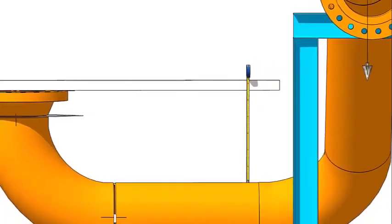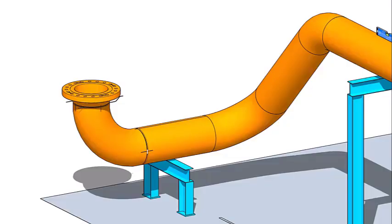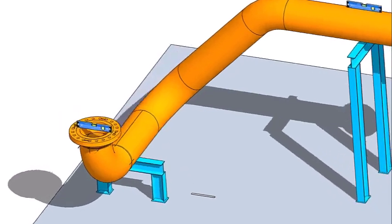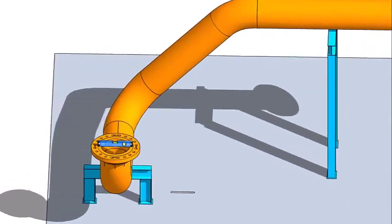If the measurements are equal, that means the face of the flange and the axis of the pipe are parallel. Tolerance may apply as per the procedure. Please watch my previous videos for piping fabrication tolerance.